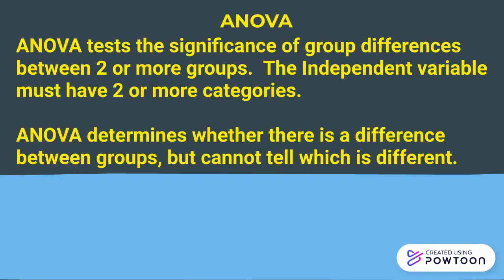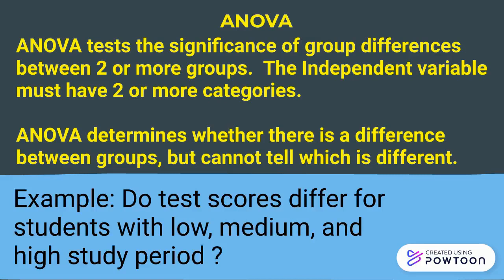The next one is ANOVA. ANOVA tests the significance of group differences between two or more groups. The independent variable must have two or more categories. ANOVA determines whether there is a difference between groups, but it cannot tell which group is different. For example: do test scores differ for students with low, medium, and high study periods?